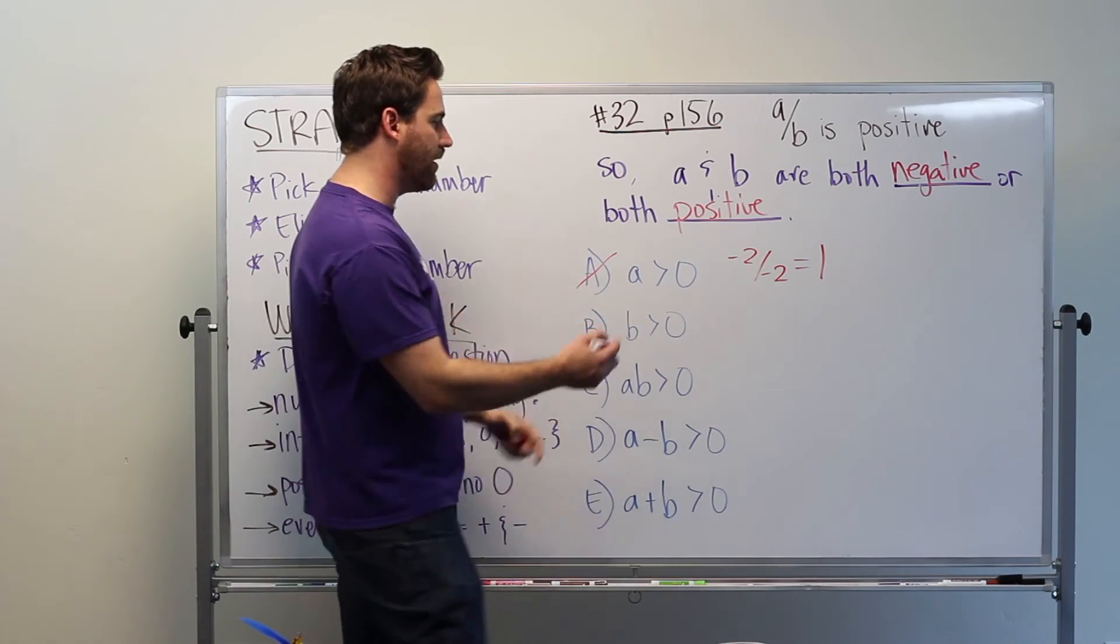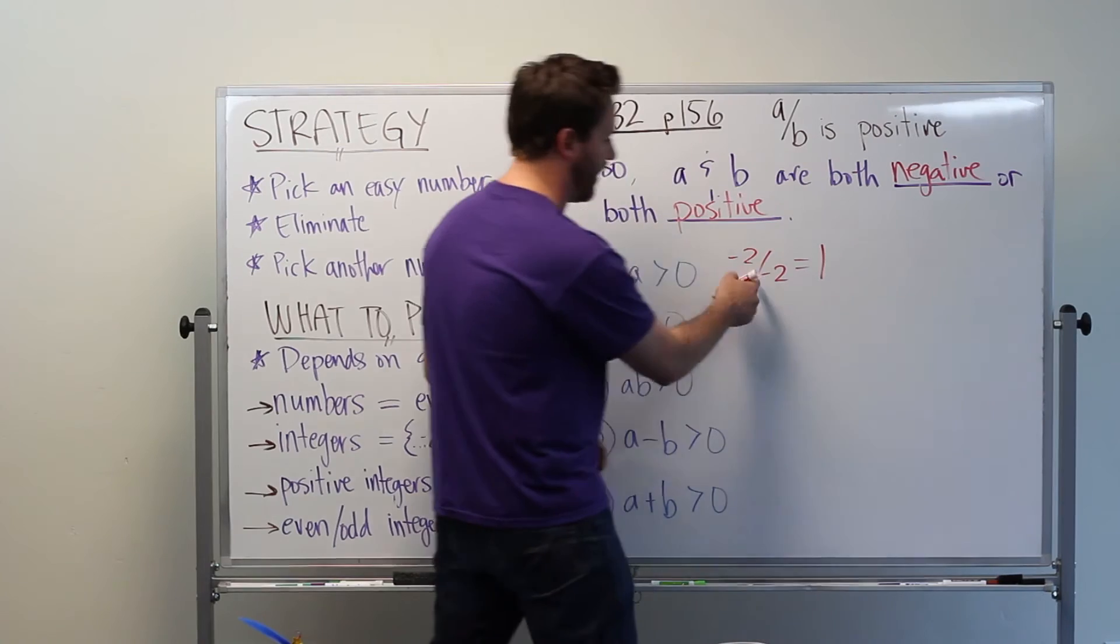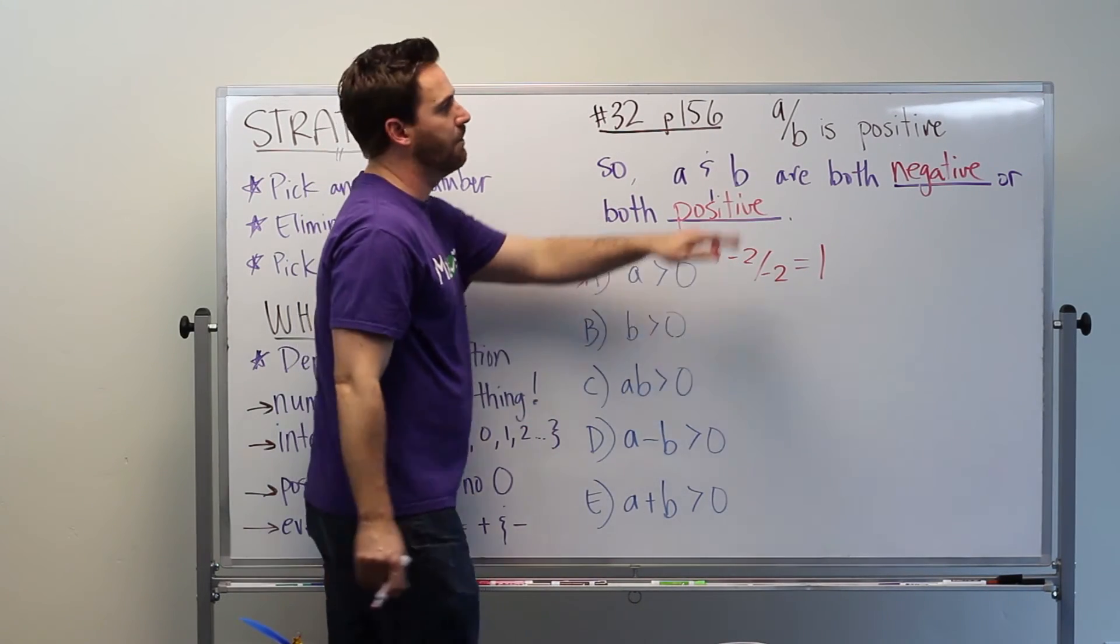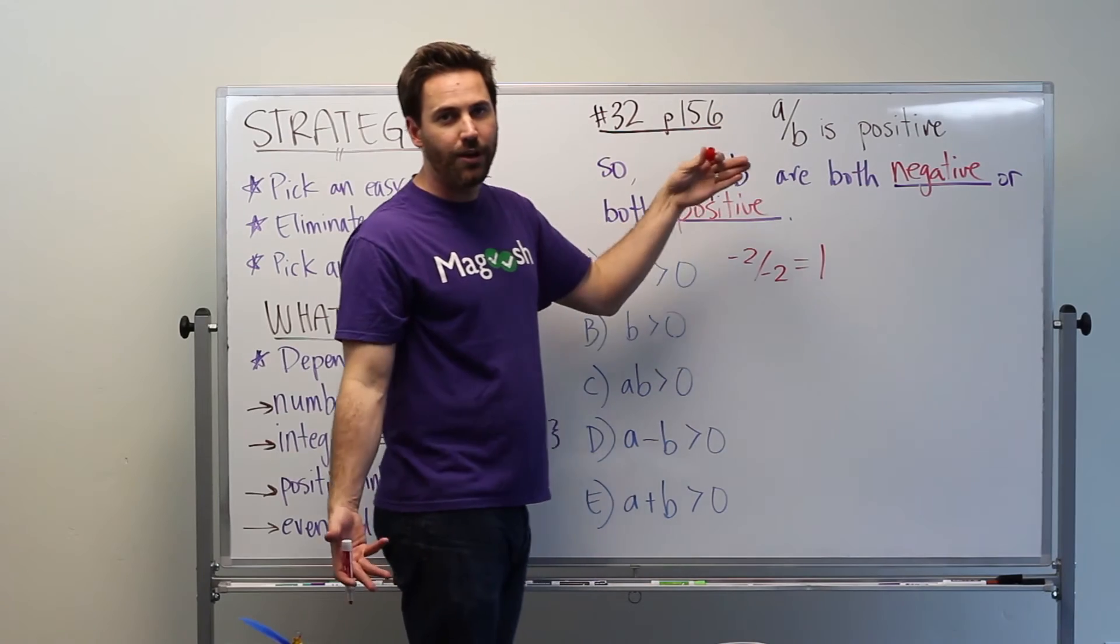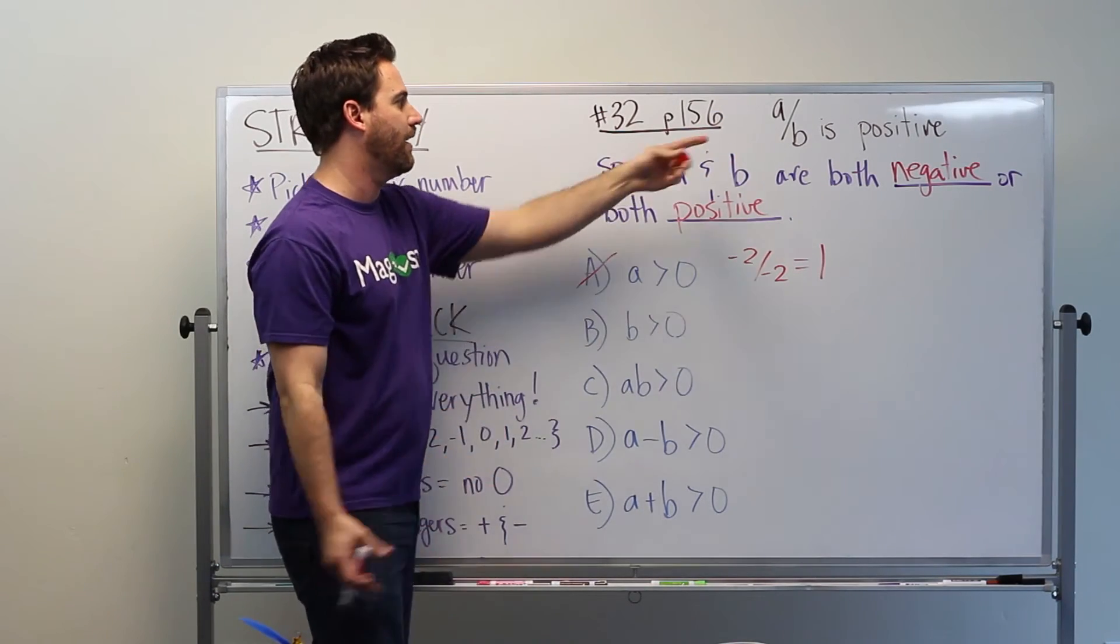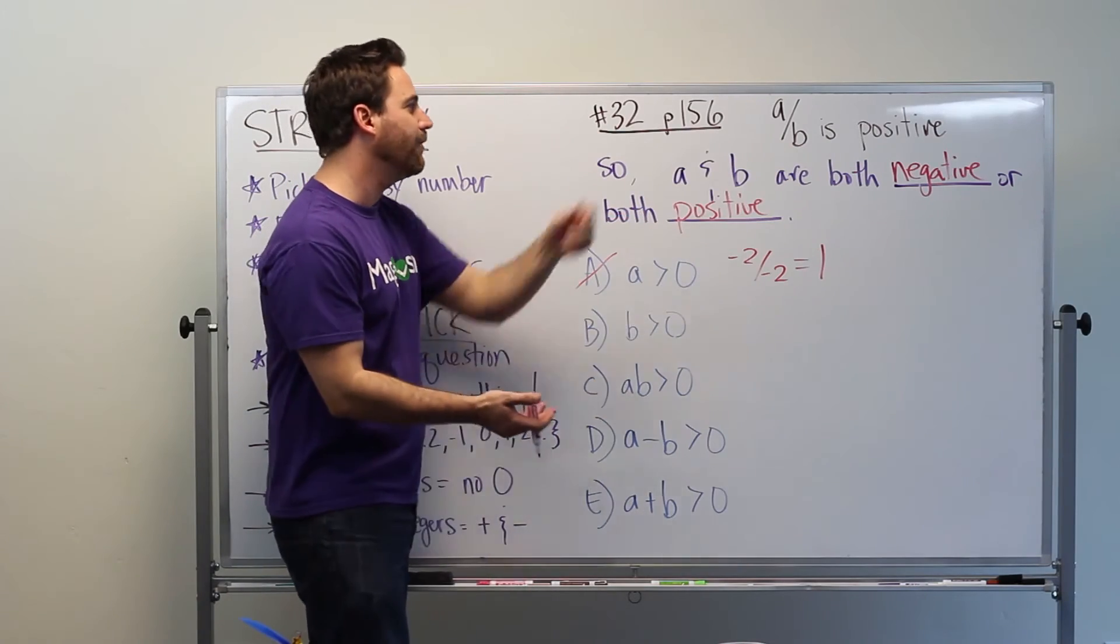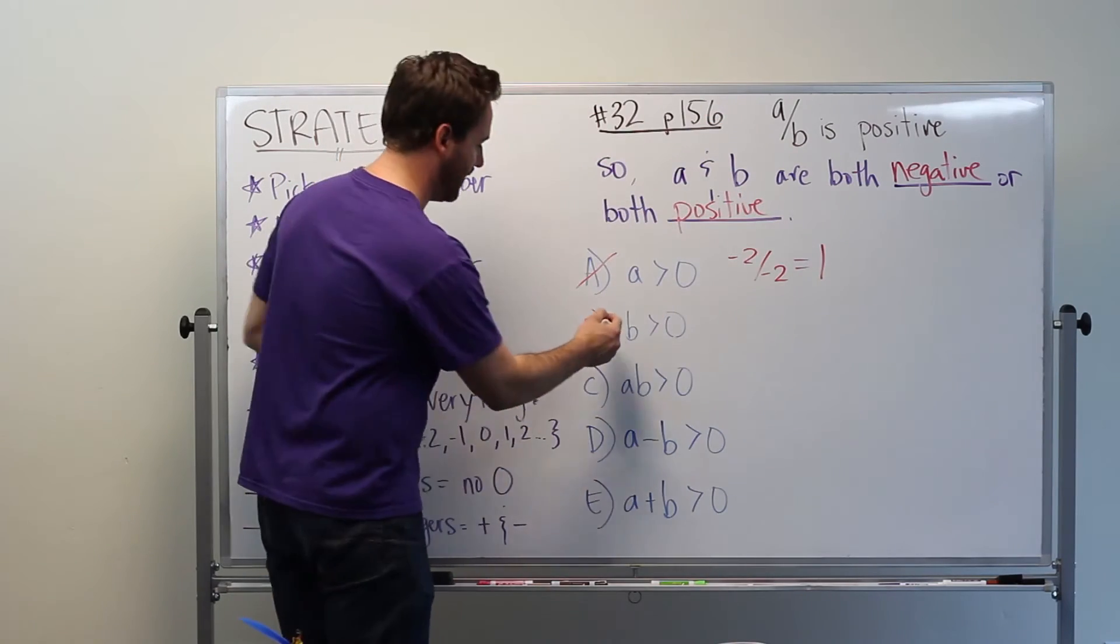B, similarly, B is greater than zero. We can use this same evaluation. Here we have negative two, which is lower than zero, but it still does yield a correct - it fulfills the information that we are given. There we go.